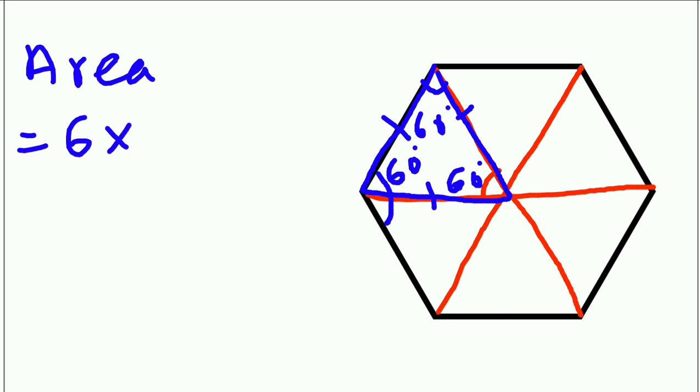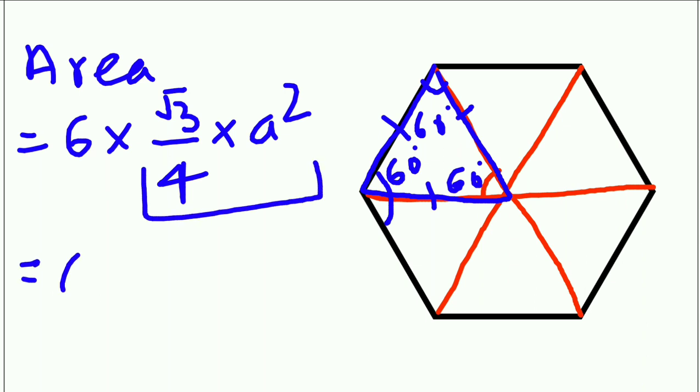And what is the area of one equilateral triangle? That is √3/4 times side squared. Just keep this formula in mind. So here, six times √3/4.